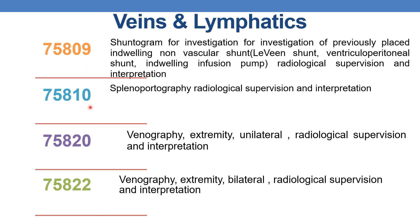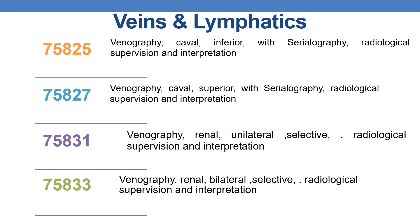CPT 75810 is splenoportography, radiological supervision and interpretation. CPT 75820 is venography, extremity, unilateral, radiological supervision and interpretation. CPT 75822 is venography, extremity, bilateral. CPT 75825 is venography, caval inferior, with serialography, radiological supervision and interpretation. CPT 75827 is venography, caval superior, with serialography — serialography meaning serial x-ray images taken in a series — radiological supervision and interpretation.